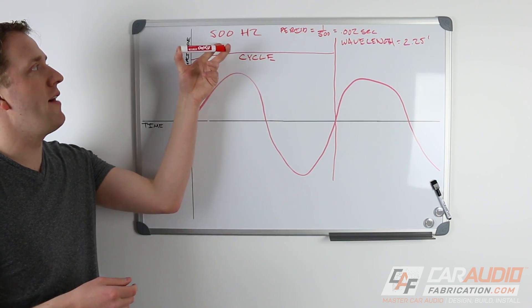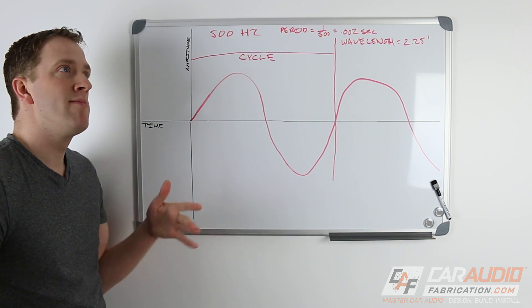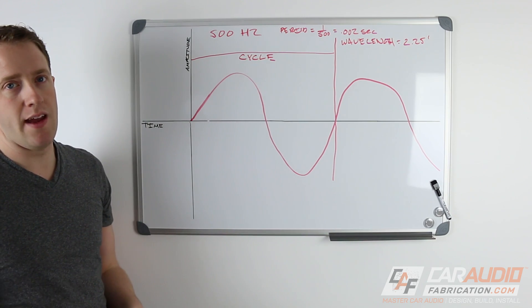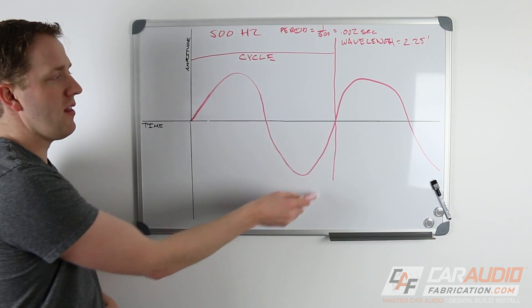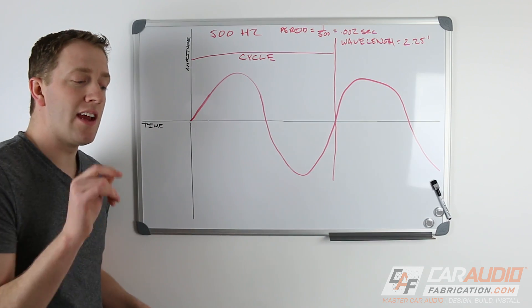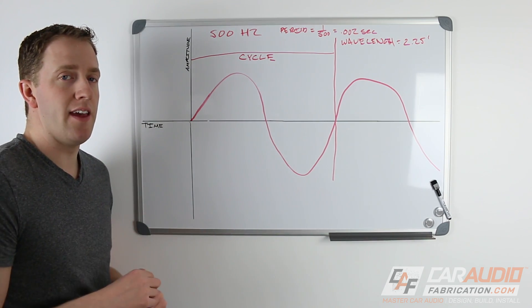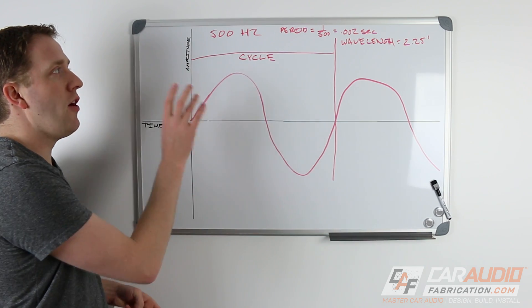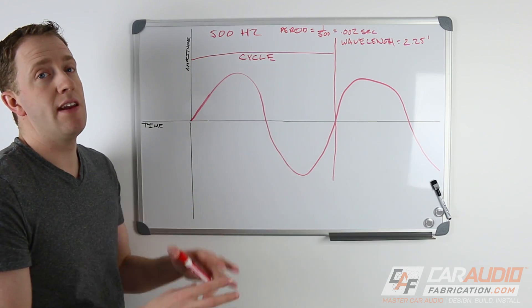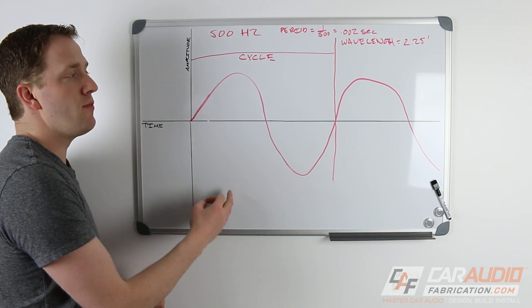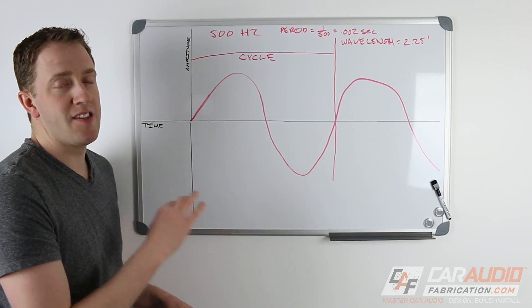So what if we were playing a 500 hertz sine wave at the same time as playing, I don't know, a 400 hertz sine wave? What would happen is this waveform is no longer going to look like this. It's going to be slightly different. And I can actually show that to you guys in a second. But the point I want to make is even though it's going to look different, it's still going to have a repetitive cycle. So it's going to still be considered a periodic signal.